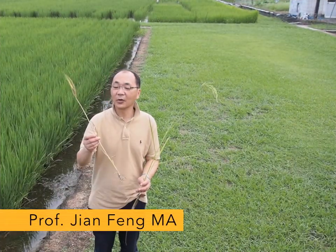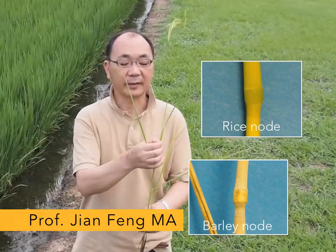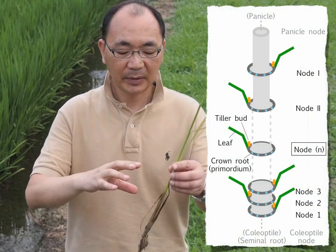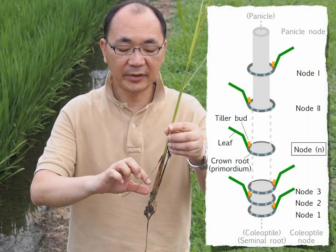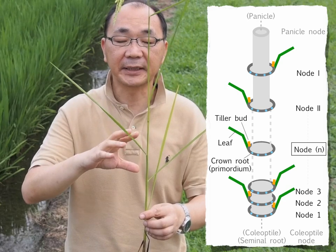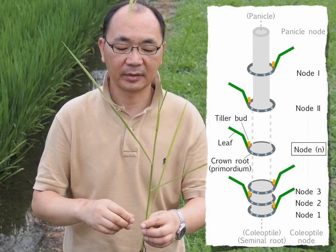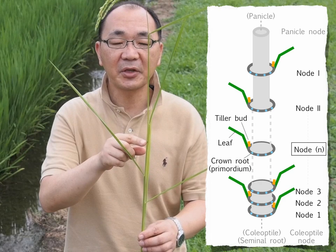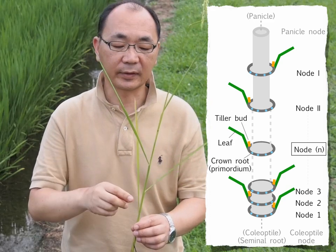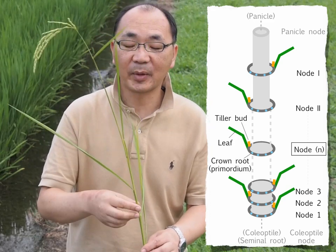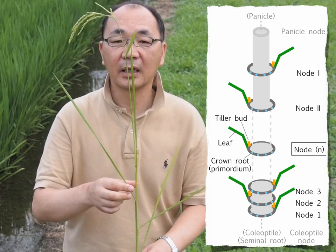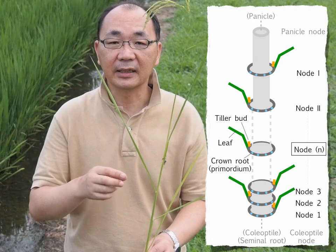This is a node of barley and this is a node of rice. Modern rice cultivars usually have 13 to 18 nodes, but most of them are stacked at the basal region. Only 4 to 5 internodes are elongated at the reproductive stage. Each node has the same unit including leaf, tiller, and crown roots. Therefore, graminaceous plants consist of repeated nodes, and this repeated structure is also seen in the vascular system.